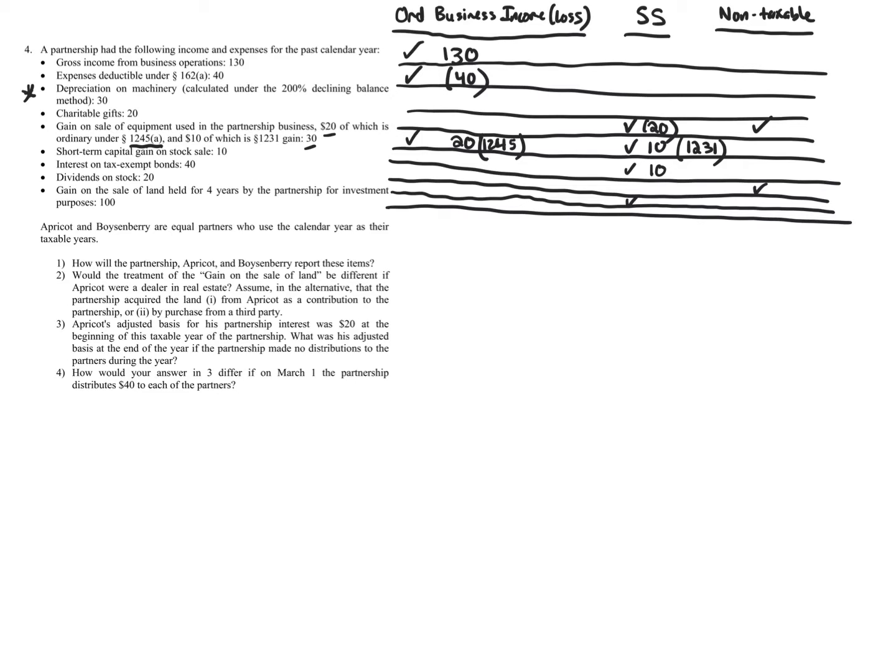Dividends on stock are separately stated for two reasons. First, individuals get preferential tax rates on qualified dividends. Second, even if there were no preferential rates, corporations get the dividends received deduction — a deduction for dividends received. Those two reasons make dividends a separately stated item.